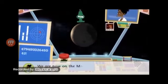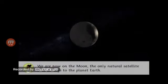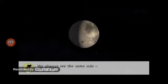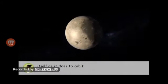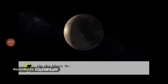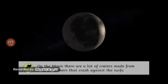We are now on the Moon, the only natural satellite that belongs to planet Earth. We always see the same side of the Moon because it takes the same amount of time to rotate around itself as it does to orbit the Earth. On the Moon, there are lots of craters made from meteor showers that crash against the surface.